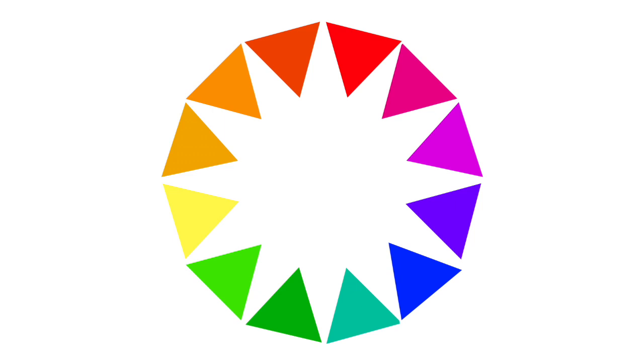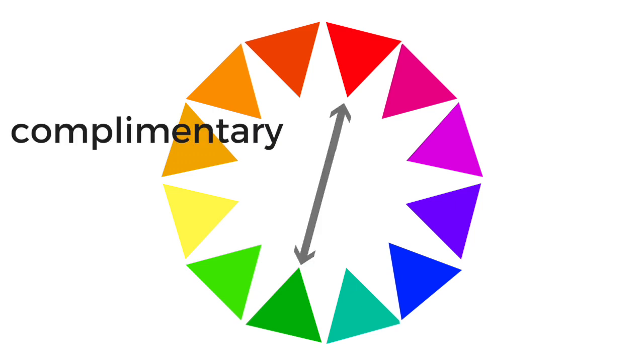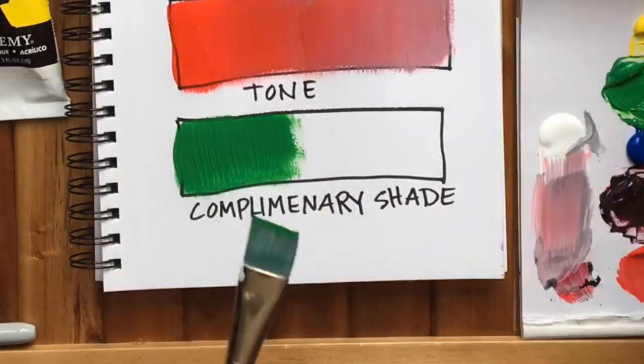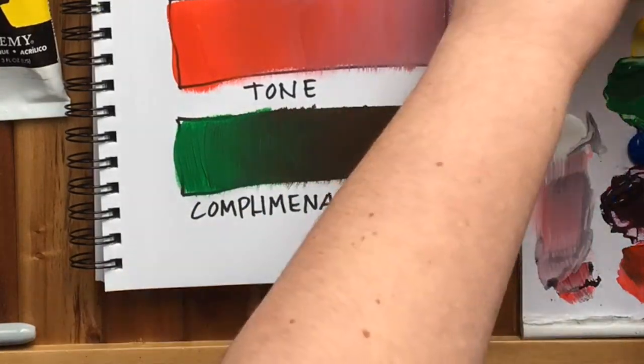Fun fact with shades — if you add the complementary color instead of black, that will make a more realistic-looking shade, like if you're painting a landscape. For example, with a green bush, add red and you've got some really good shaded bushes. Experiment with that complementary shading so you have a reference guide to look back at.